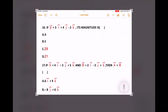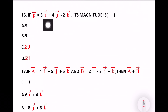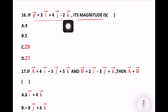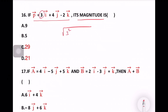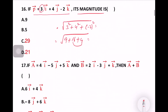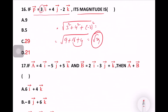Next question: A force 3i + 4j − 2k. Find its magnitude. Magnitude is found using the square root formula: √(3² + 4² + (−2)²) = √(9 + 16 + 4) = √29. Option number C is the right answer.